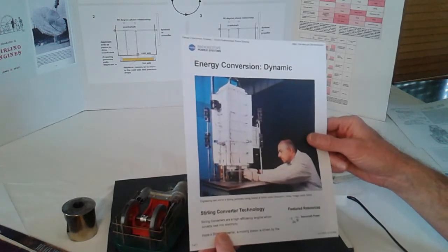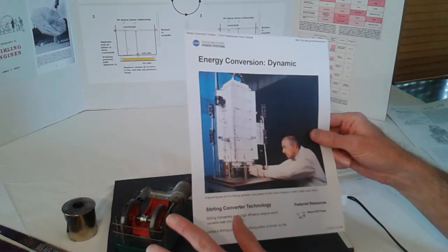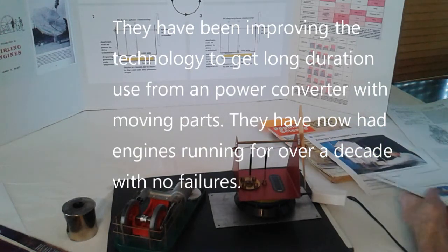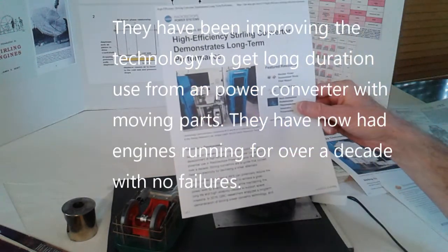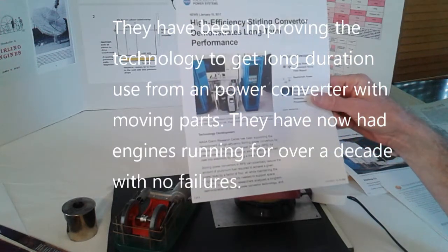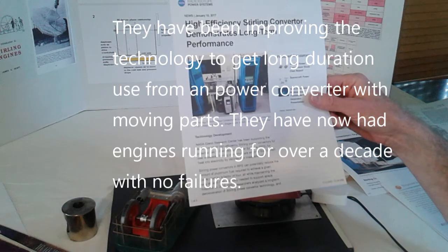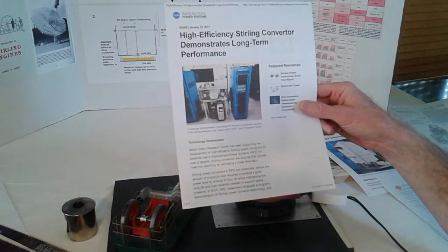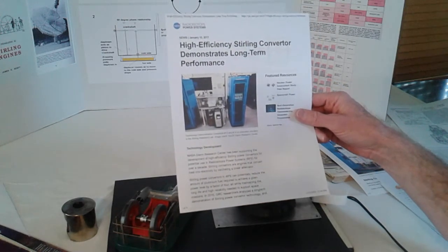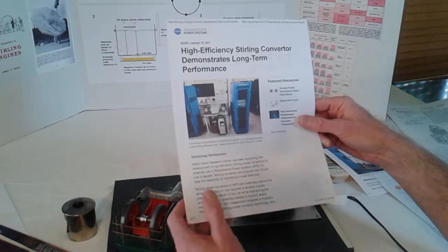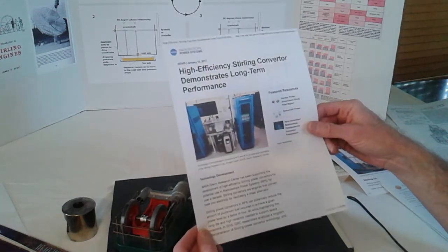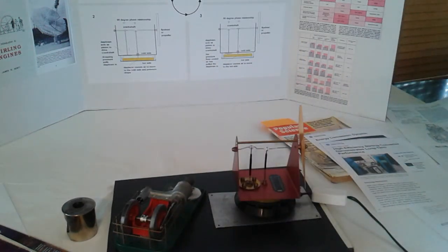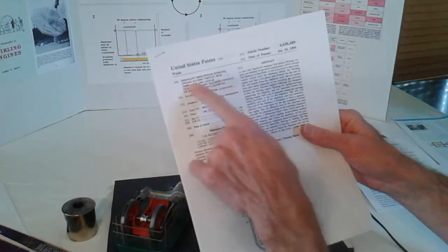The Stirling cycle engine can do that a lot more efficiently, at a lot higher efficiency level. The only issue is it's got moving parts. They've been developing ways of having the moving parts designed so they last for a long time. One of the latest things is they've been doing some tests at NASA Glenn, long-term tests. They've been running these things for quite a number of years, over a decade, without any failures. So they're proving that the Stirling cycle engine can be used as a power system for space usage, using nuclear power, using solar power, whatever source of heat they can use on it.